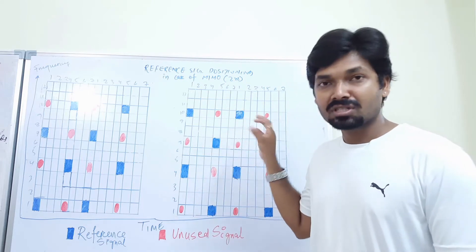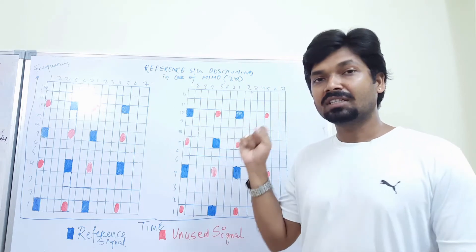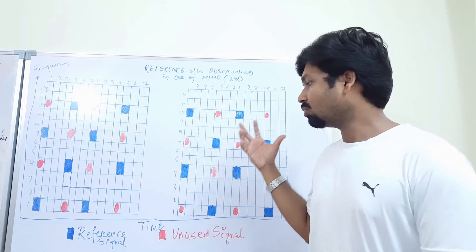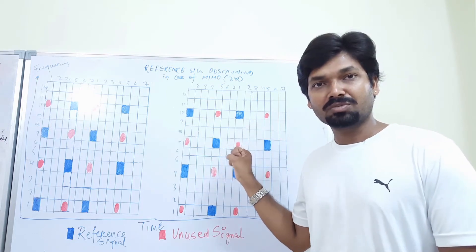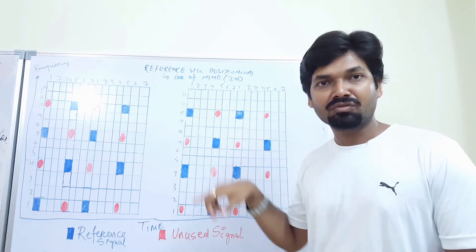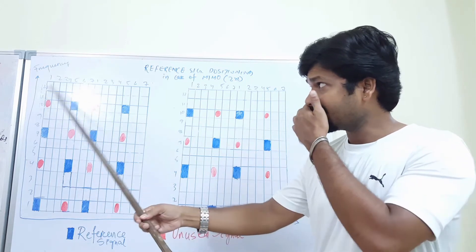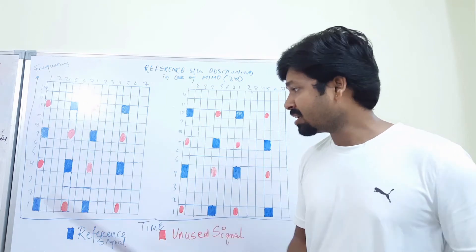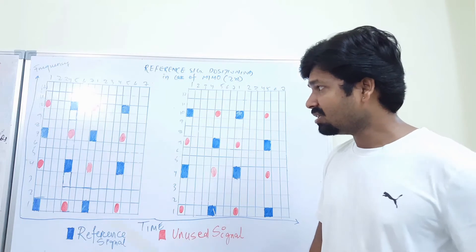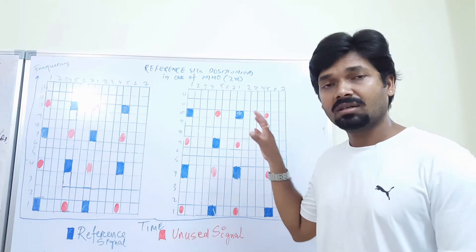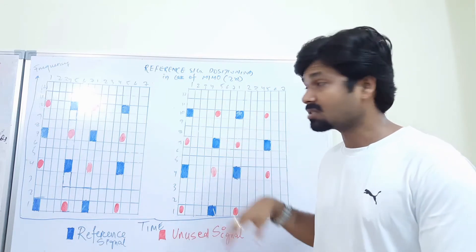We'll look at how the reference signal will be transmitted. In the last chapter we have already seen how the reference signal is transmitted in a time and frequency grid. This one is the frequency grid and this one is the time grid.